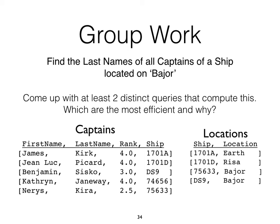Let's do a quick sanity check on that solution. We're going to join captains and locations, then get James Kirk with ship 1701A, Earth — that won't pass the Bajor filter. Jean-Luc Picard with ship 1701D, Risa — nope. Benjamin Cisco with ship DS9, Bajor — yes, that passes and we'll get that last name. Going through the whole thing, it seems like you're going to get the expected result. In this case, that would be Cisco and Kira.